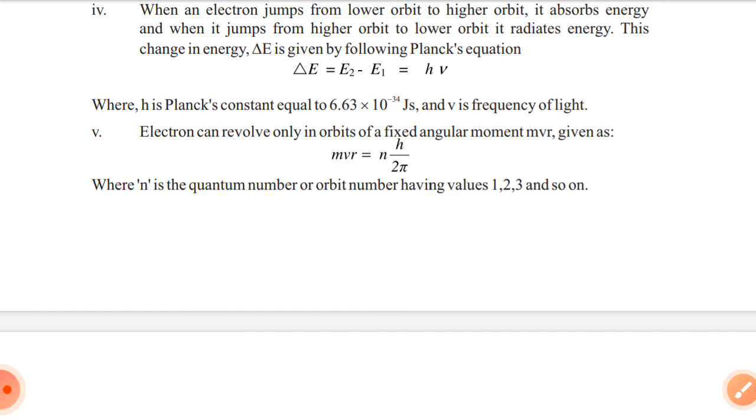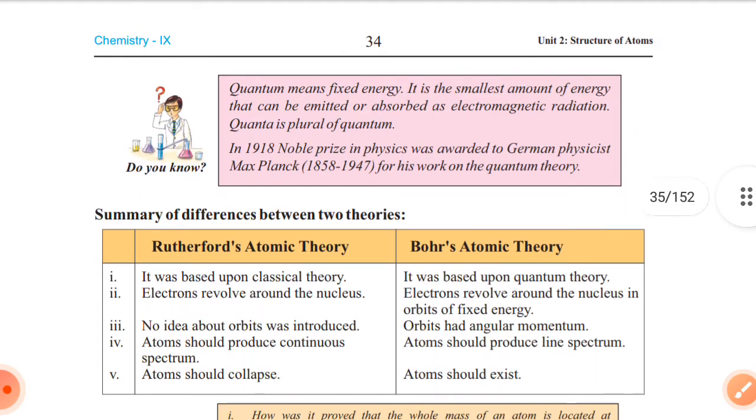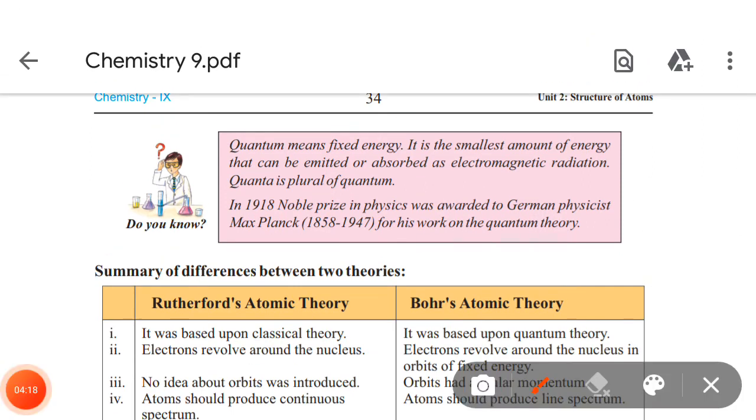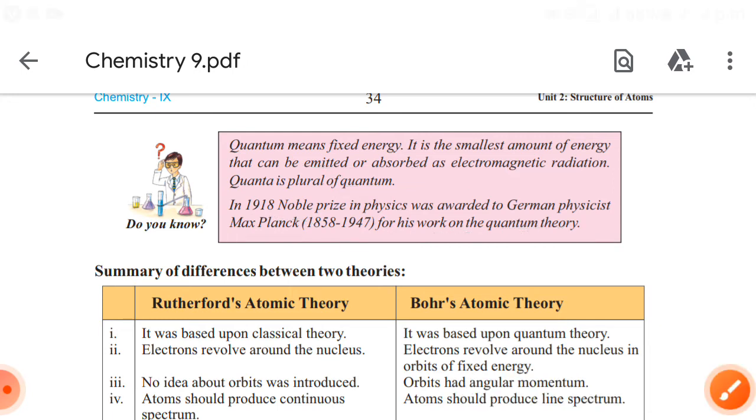We have discussed a little bit what is quantum. Quantum means fixed energy. It is the smallest amount of energy that can be emitted or absorbed as electromagnetic radiation. Quanta is the plural of quantum. In 1918, Nobel Prize in Physics was awarded to the German physicist Max Planck for his work on the quantum theory.